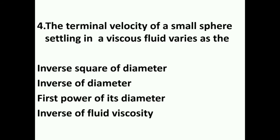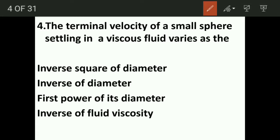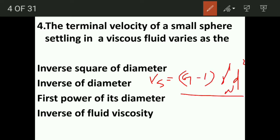The terminal velocity of a small sphere settling in a viscous fluid varies as: settling velocity V = (G−1) × γ_w × D² / (18μ). From this equation, settling velocity is directly proportional to the square of diameter. So the correct option is the second power of diameter. Also, settling velocity varies with the inverse of fluid viscosity.